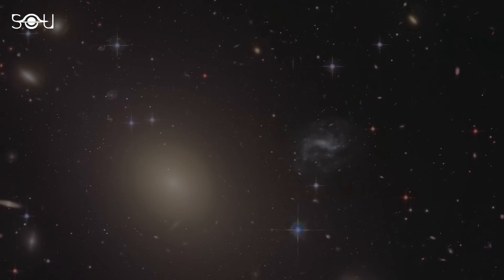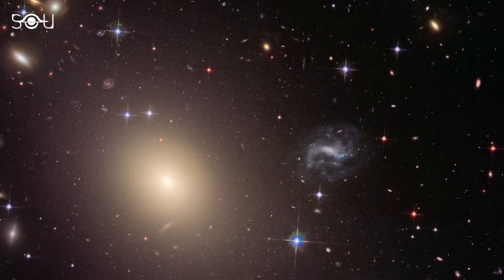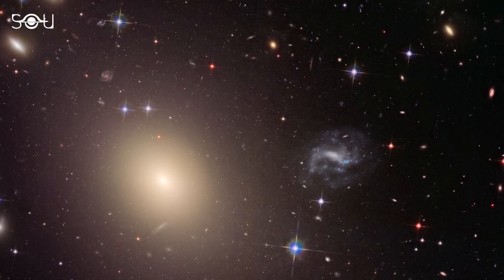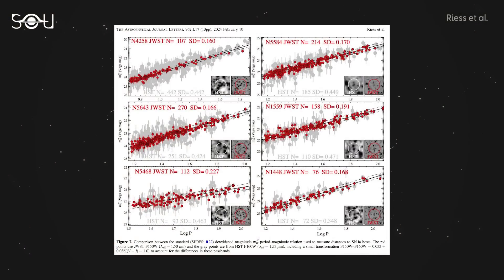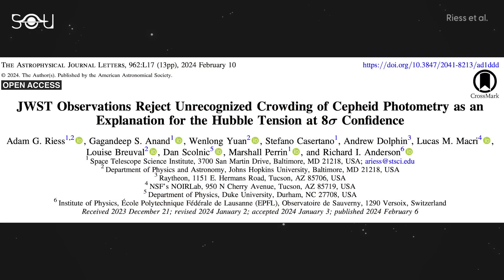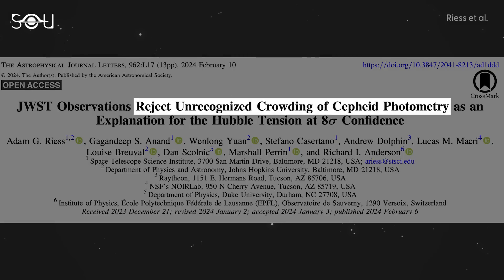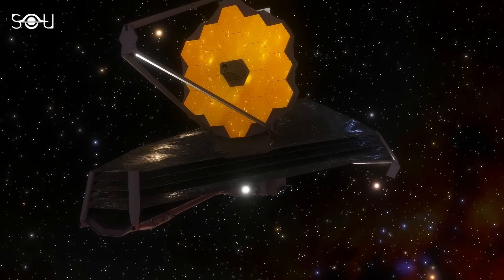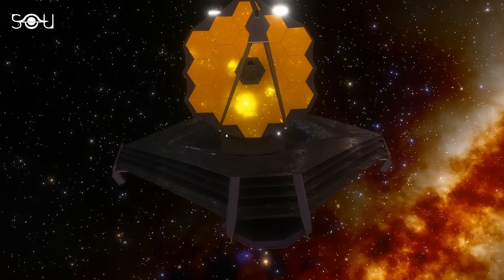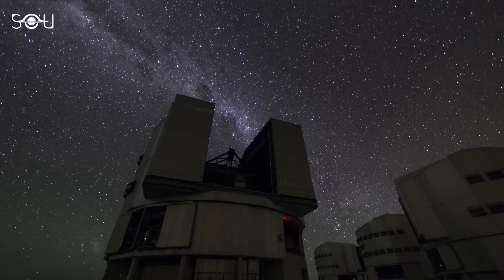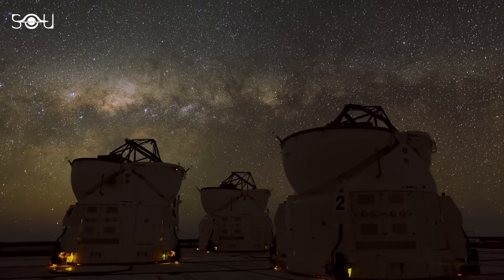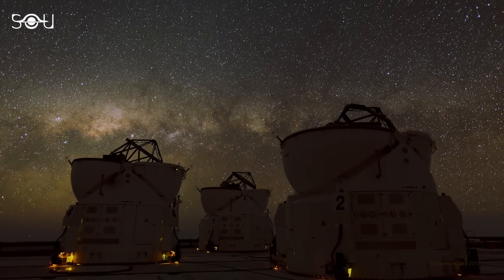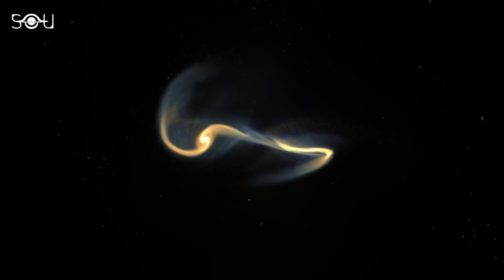To confirm the results, the same team observed larger samples of Cepheid variables and supernovae in a total of six galaxies. To their surprise, they got consistent results that confirmed the Hubble tension. Based on this, the team confidently ruled out measurement error as the cause of Hubble tension. The observations made by the James Webb Space Telescope have validated the value of the Hubble constant, confirming the crisis in cosmology. This means the Hubble tension isn't a result of technological limitations or measurement uncertainties — rather, it exposes a gap in our fundamental understanding of the universe.